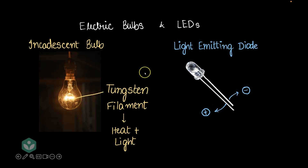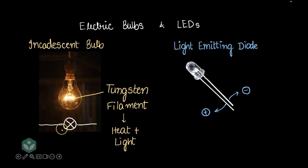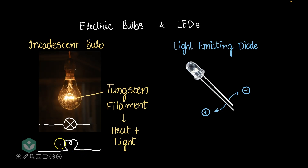If we had to draw incandescent bulbs or LEDs in a circuit, we would have to use circuit symbols. This is how you draw the circuit symbol of an incandescent bulb. There is another circuit symbol for the incandescent bulb as well. I personally prefer the second one because it resembles the bulb a lot more — this loop seems to be something like the filament.